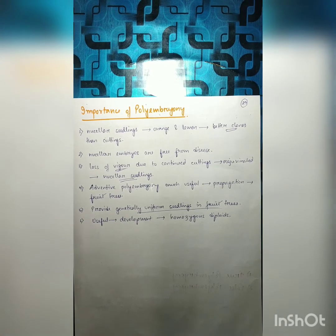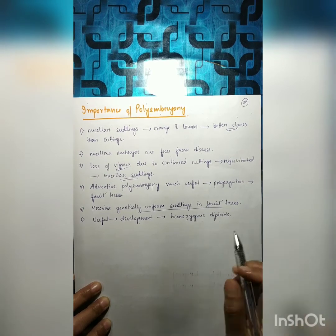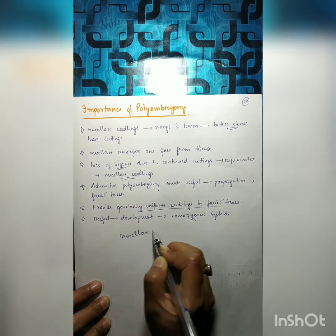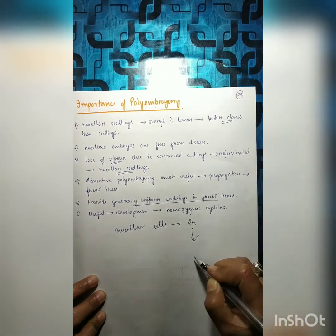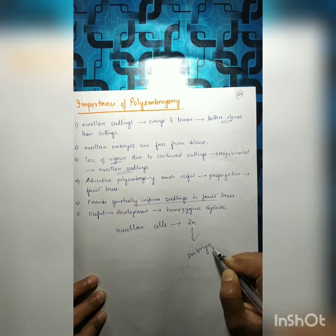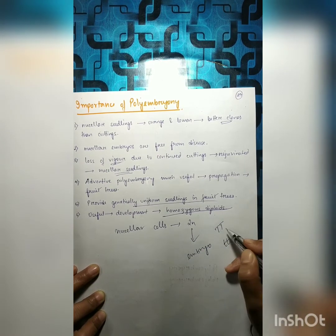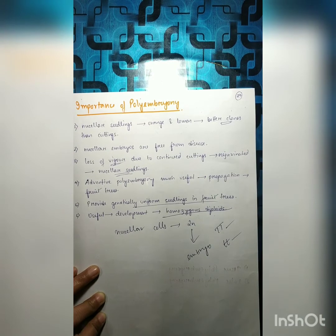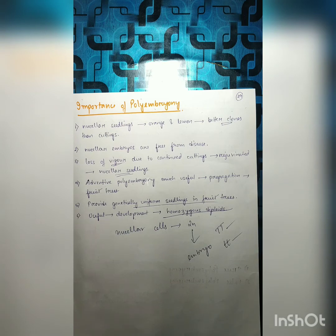Polyembryony is useful for the development of homozygous diploids. Nucellar cells undergo no meiosis and directly give rise to embryos, so they remain homozygous diploid. Whether the character is dominant (TT) or recessive (tt), if it is a desirable characteristic, it is profitable and useful for genetic study.